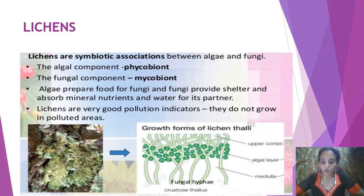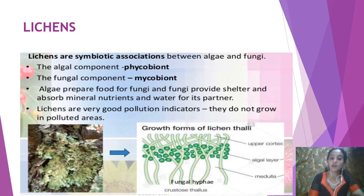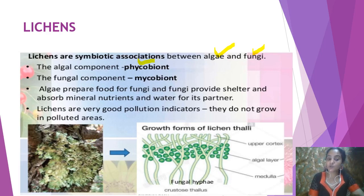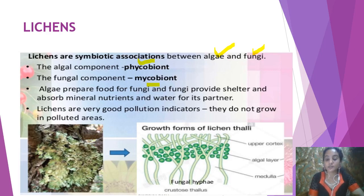The last topic in your book is lichens — we have discussed this briefly before. What are lichens? Lichens are a symbiotic association between algae and fungi. The algal component of the lichen is called the phycobiont — from phycology, the study of algae. The fungal component is called the mycobiont — from mycology, the study of fungi. Both live together and help each other in one way or the other.